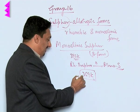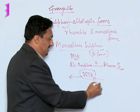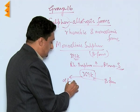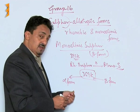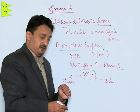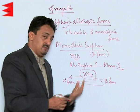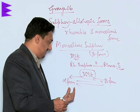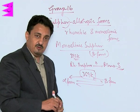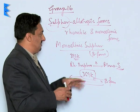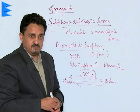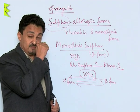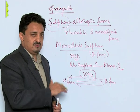Below 369 Kelvin, the beta form transforms to the alpha form, and above 369 Kelvin, the alpha form converts to the beta form. So alpha and beta forms are interconvertible. Below 369 K Sulphur exists as the alpha (rhombic) form, and above it as the beta (monoclinic) form. This temperature is called the transition temperature.